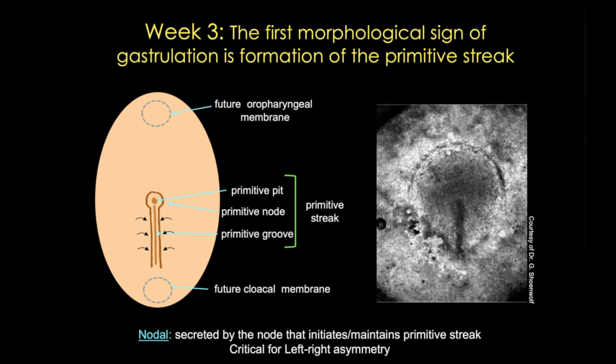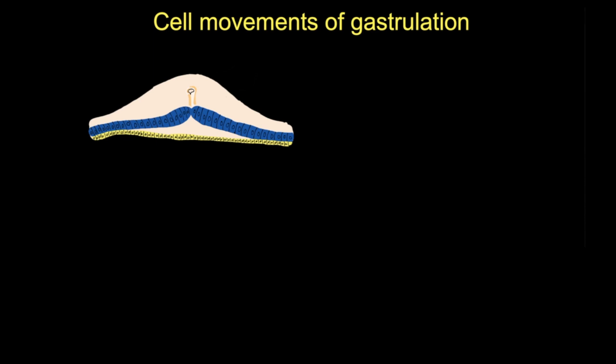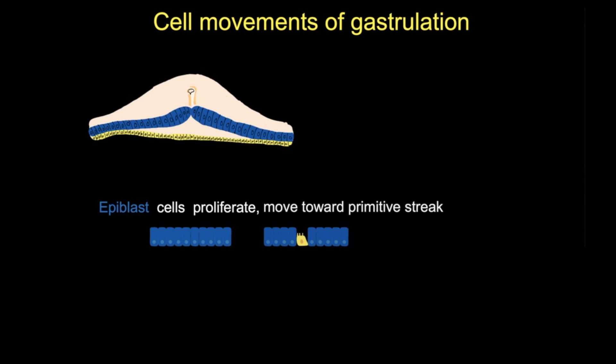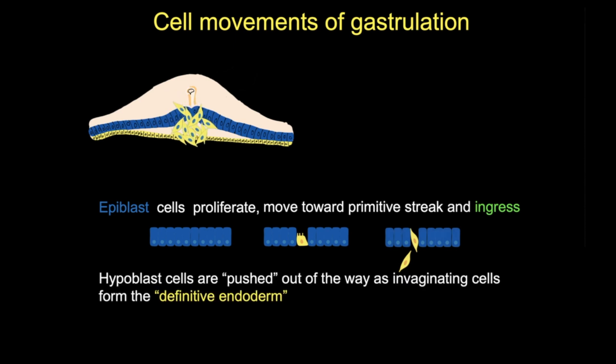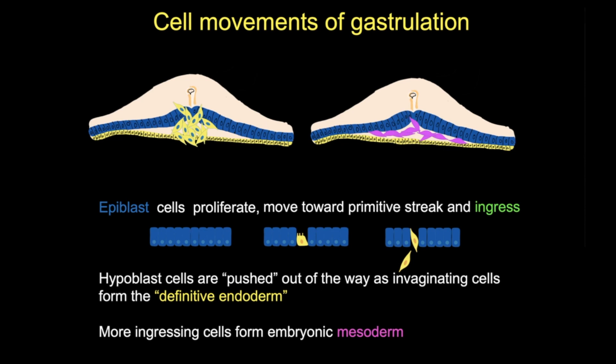Looking at cell movements in cross-section: the blue epiblast cells and yellow hypoblast cells are visible along with the brown primitive streak. Epiblast cells proliferate, move toward the primitive streak, and change shape to look almost bottle-shaped — this is called epithelial-to-mesenchymal transition. They then detach from the epiblast and slip beneath it in a process called ingression. The first cells that move interiorly displace the hypoblast cells to form the definitive endoderm. Other cells halt their migration between the endoderm and epiblast to become mesoderm. The remaining epiblast cells will become ectoderm.